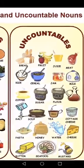Now we have uncountable food items. For example, bread — before bread, I need a word that shows me how much quantity of bread I have.